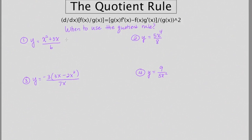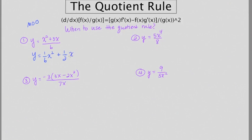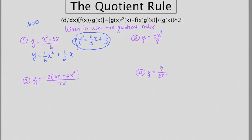However, if you do what I call the 'mu' rule — many over one — this problem can be rewritten as one-sixth x squared plus one-half x. This just becomes very simple to take the derivative of. The derivative is one-third x plus one-half. Done, simple, easy — no quotient rule.